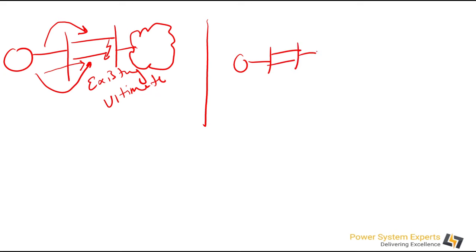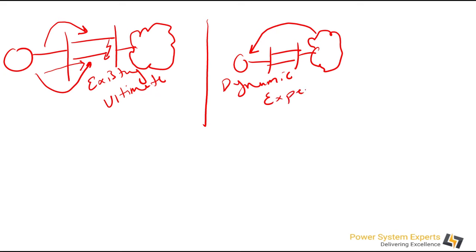The second aspect is: for the same power plant, how is this grid going to impact the plant? Here we are more interested in the dynamic aspect of this particular power plant. The grid can be strong or weak, and depending upon the strength of the grid, your plant models are going to behave accordingly.